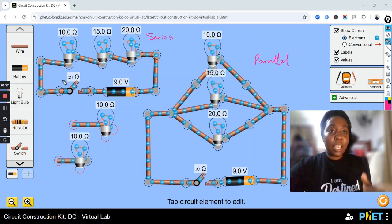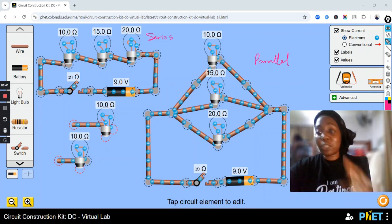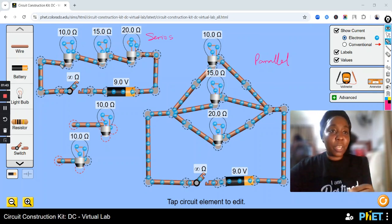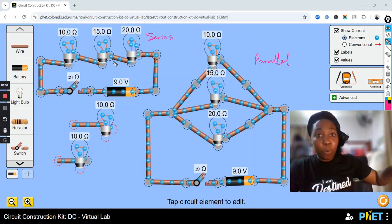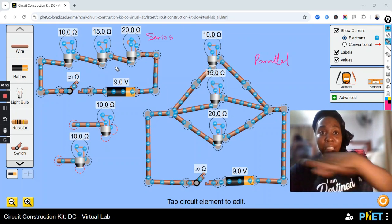Now, look at this series circuit. The bulbs here, the bulbs also is called a resistor. It's also a resistance. The bulbs here are connected end to end. Can you see this? From one end to another end to another end. That's why it is series on one line. Can you see that? On one line. Series.